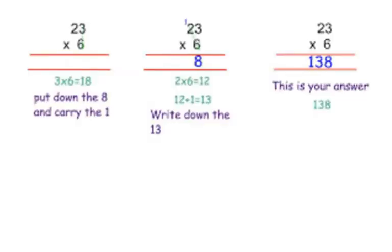When multiplying a two-digit number by a one-digit number, you take that one-digit number times the ones column, and if you need to, you write down the ones place value and carry the tens. So here that means you write down the eight and carry the one. Then you take the one-digit number times the tens column plus the number you carried. So here: six times two is twelve, plus one is thirteen, and since that's our last number we write down all of 13, making 138 the answer.